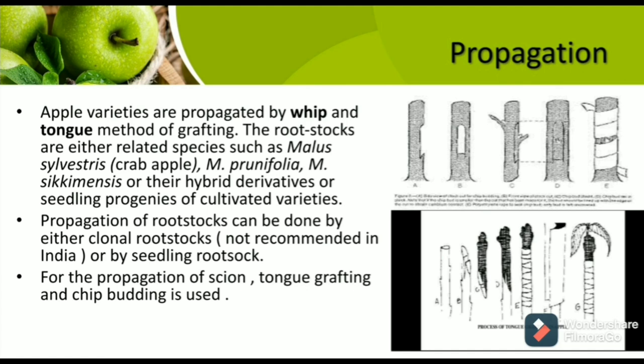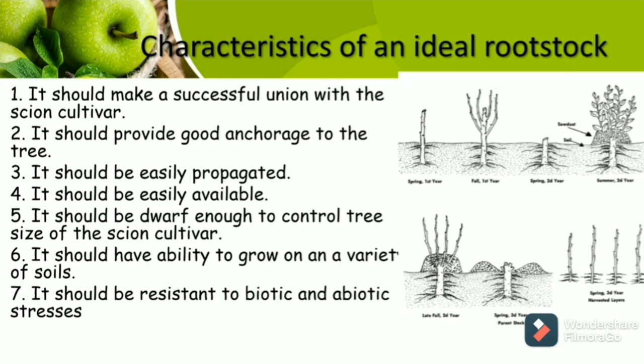Propagation of rootstocks can be done either by clonal rootstocks or by seedling rootstocks. Clonal rootstocks are not recommended in India. For propagation of scion, tongue grafting and chip budding are used. Characteristics of an ideal rootstock include: it should have a successful union with the scion cultivar, provide good anchorage to the tree, be easily propagated and available, be dwarf enough to control tree size of the scion cultivar, have ability to grow on a variety of soils, and be resistant to biotic and abiotic stresses.